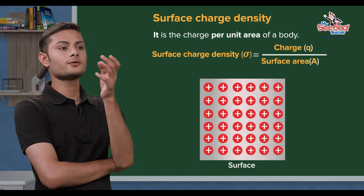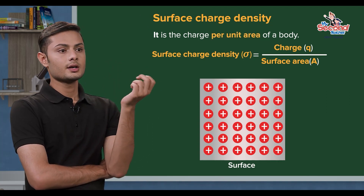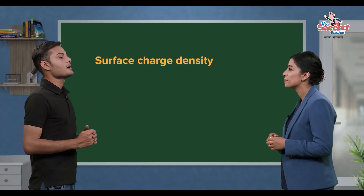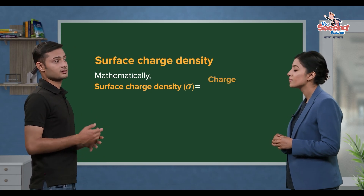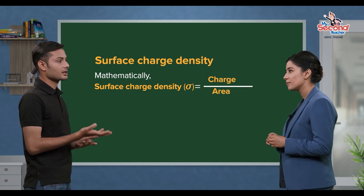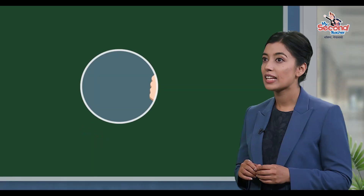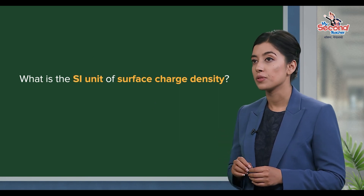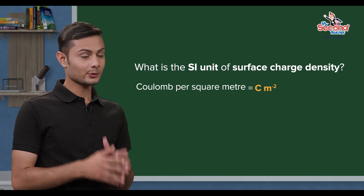Surface charge density is the charge per unit area of a body. Mathematically, surface charge density sigma equals the charge divided by area. The SI unit of charge is Coulomb, and the SI unit of area is meter squared. So, the SI unit of surface charge density is Coulomb per meter squared.